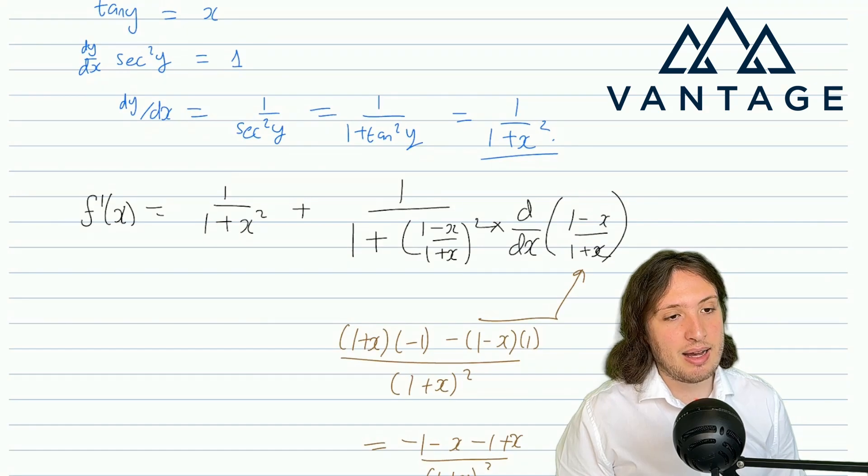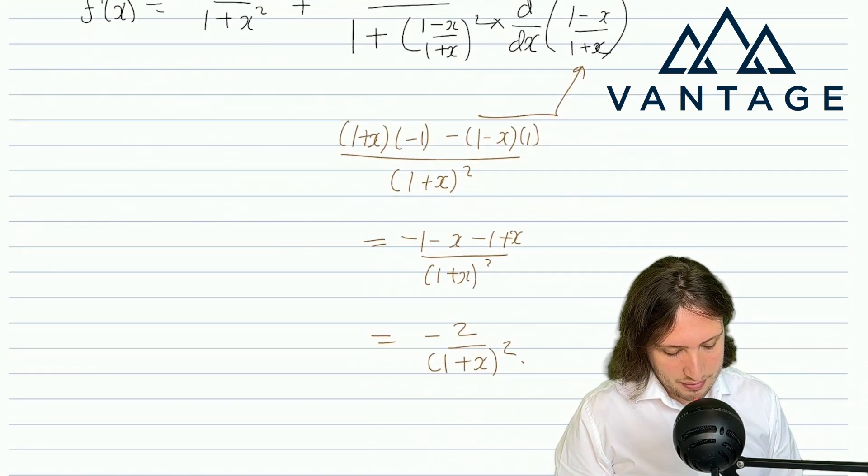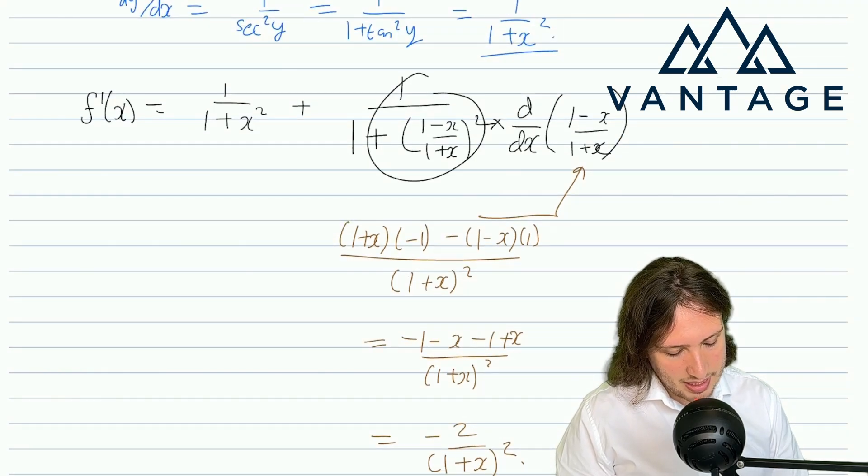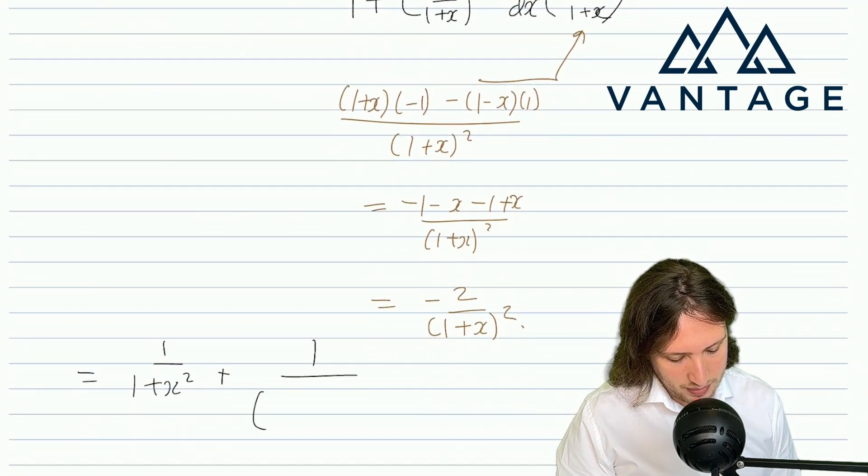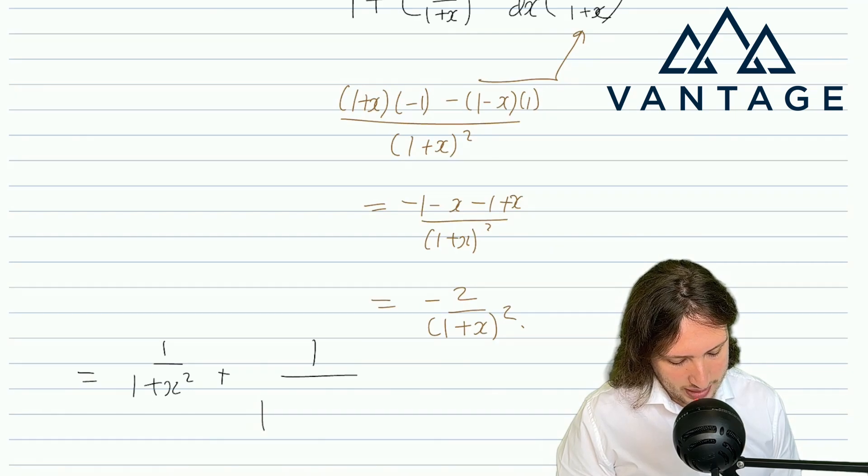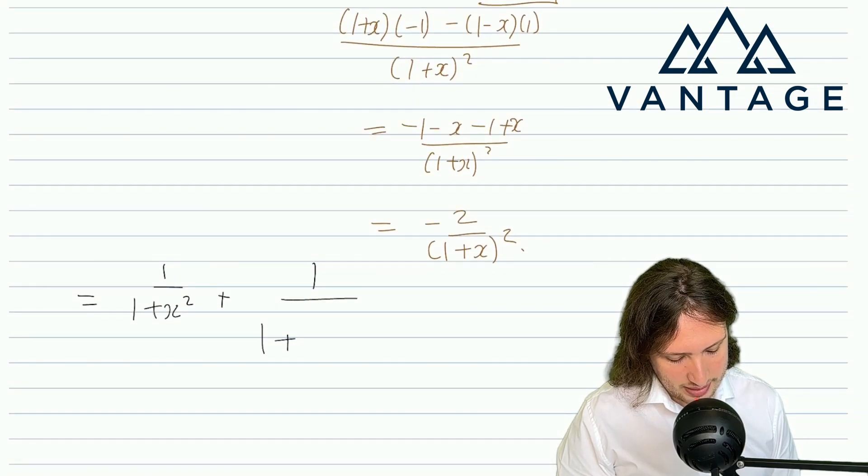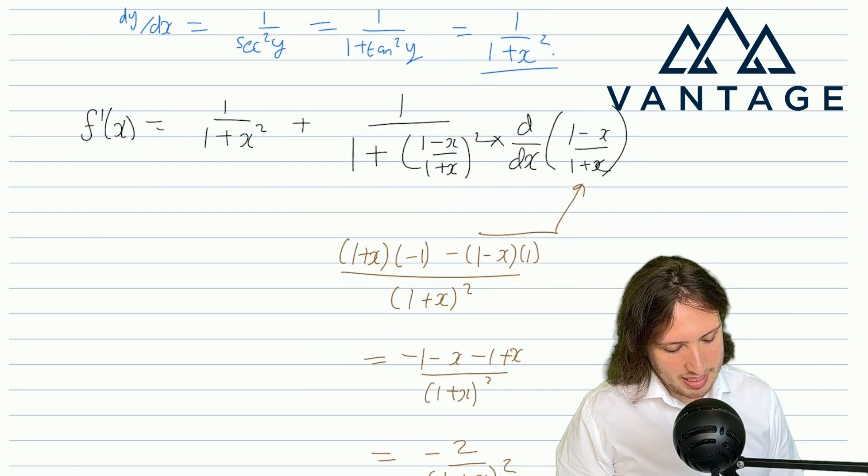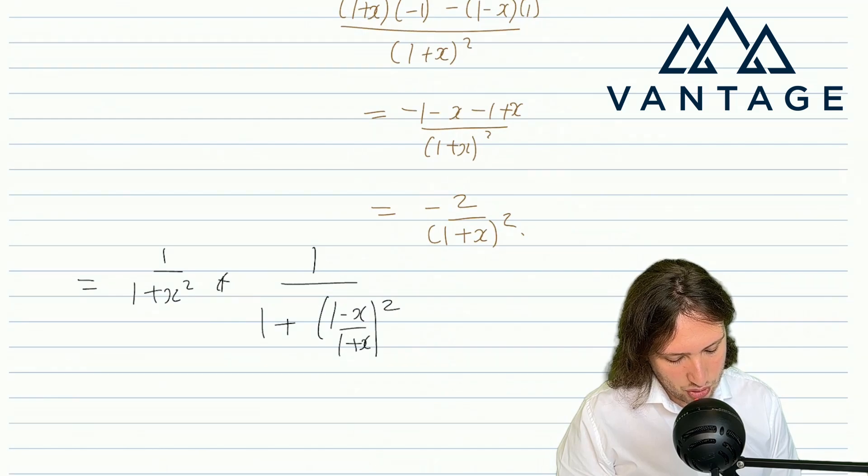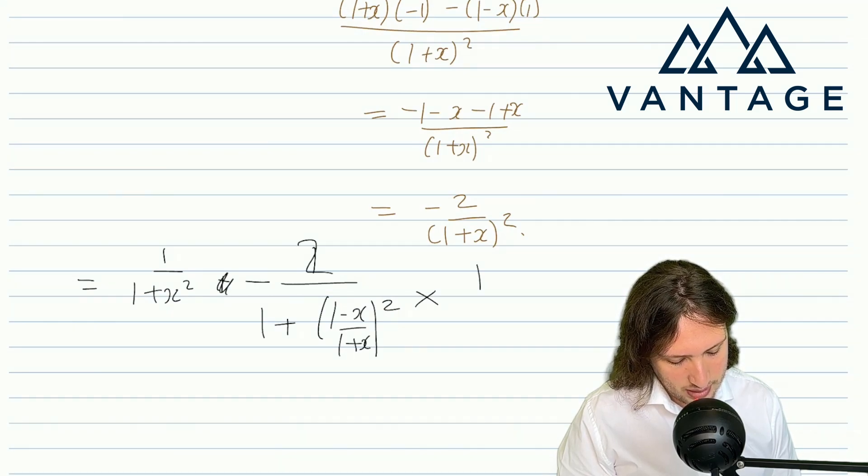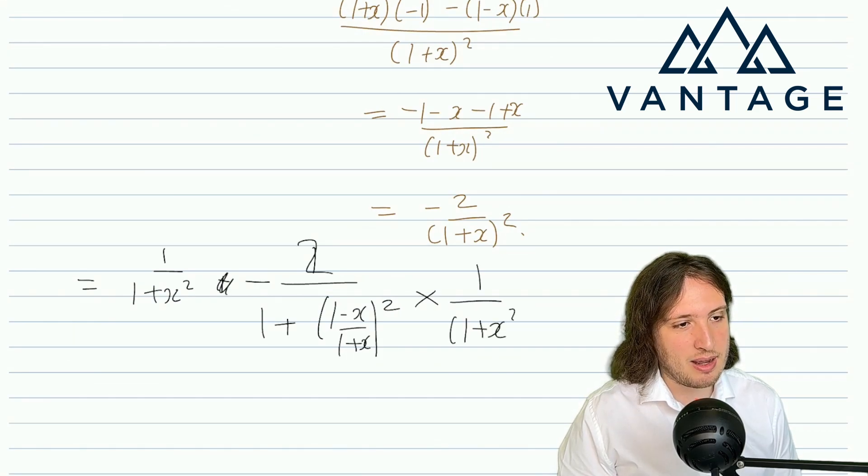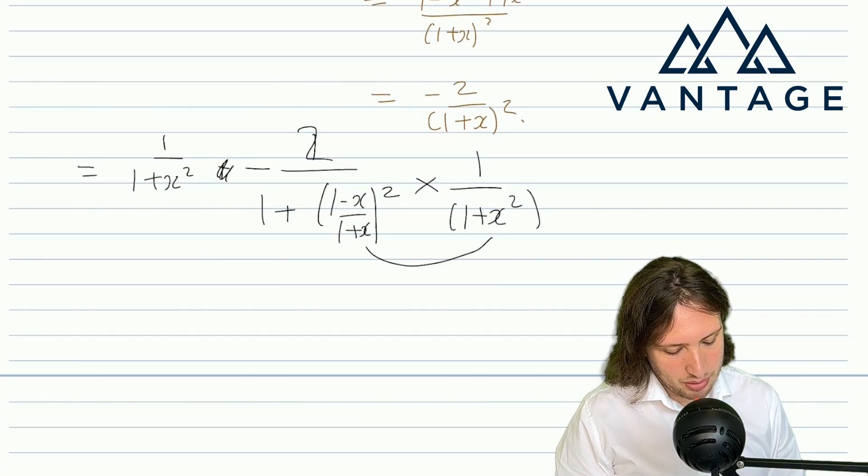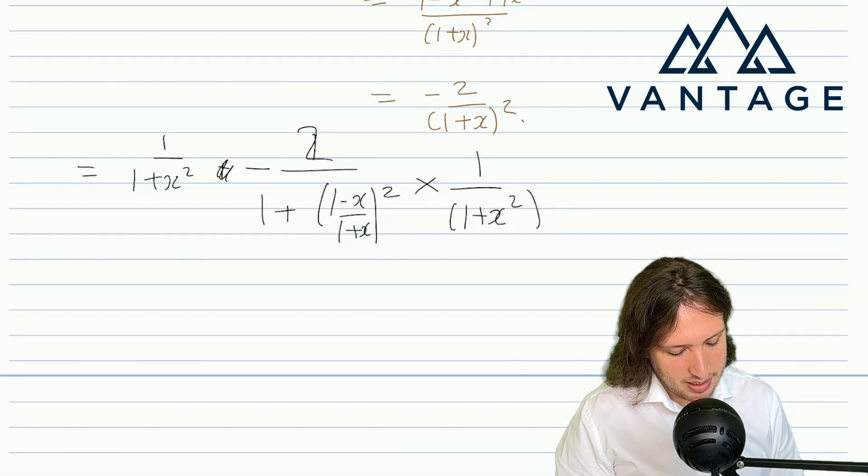So if I return to this expression now where I've got my unprocessed derivative, I've still got that first term of 1/(1+x²), and now this thing here, I've still got 1/(1 + (1-x)/(1+x))². But now this thing here we know is very straightforwardly -2, so I'll just put a minus there, turn that to a 2, and I've got 1/(1+x)².